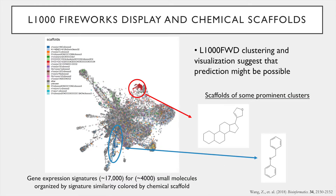The motivation for this project came from our observation from the L1000 fireworks display that some clusters of small molecule-induced gene expression signatures share the same chemical scaffolds, which you can see in this figure. In this picture there are two prominent clusters and their corresponding chemical scaffold labeled. This visualization suggested that there might be a relationship between the chemical structure of a compound and its induced gene signature.